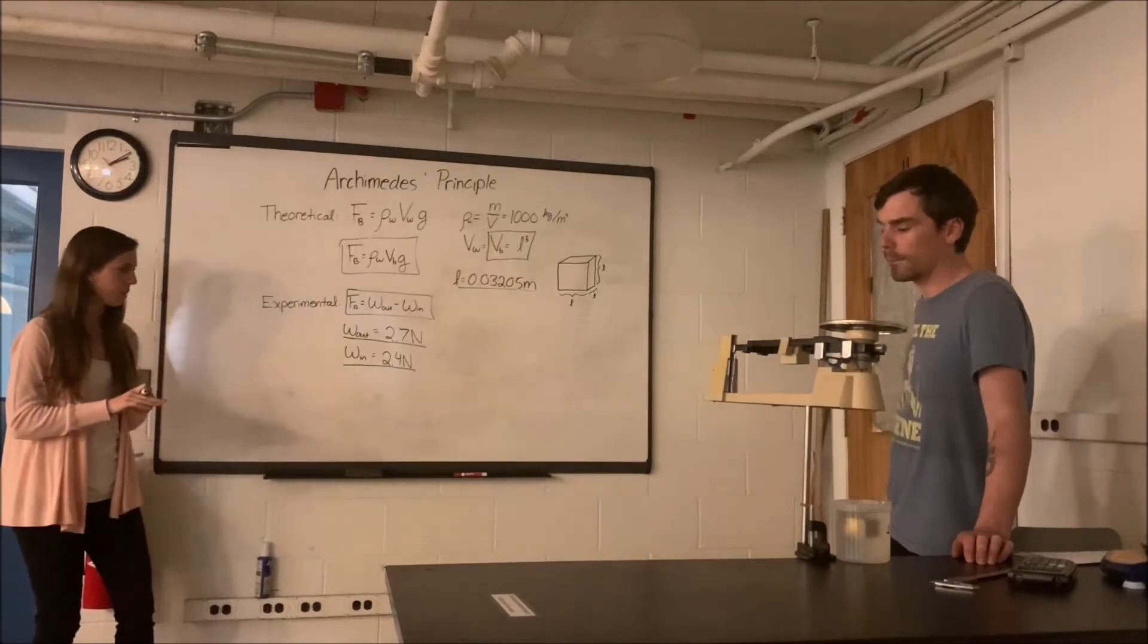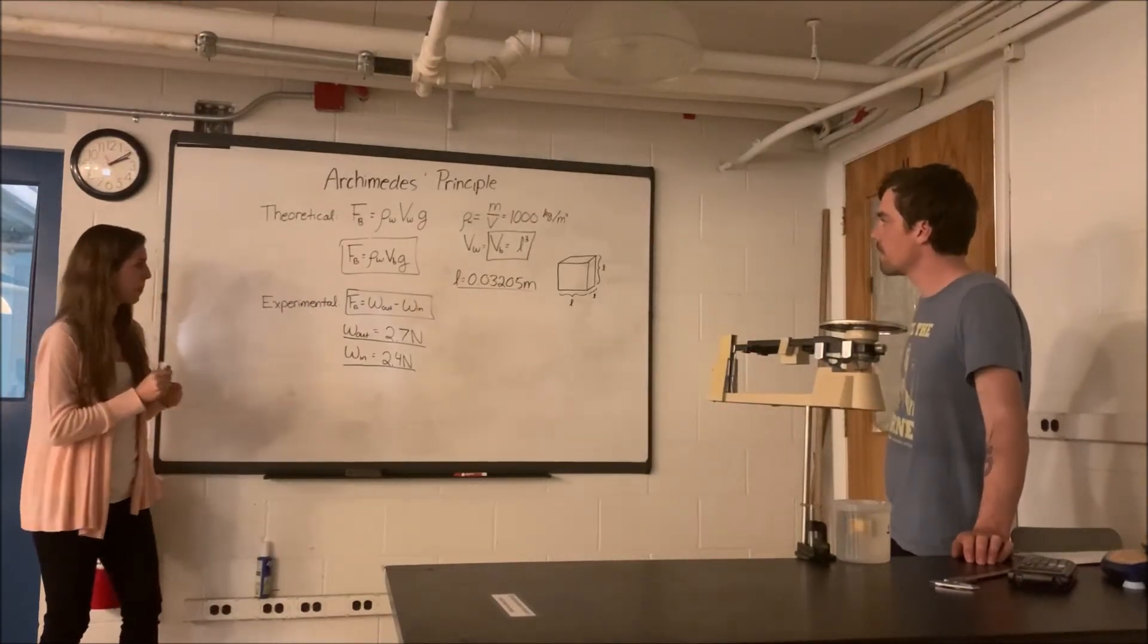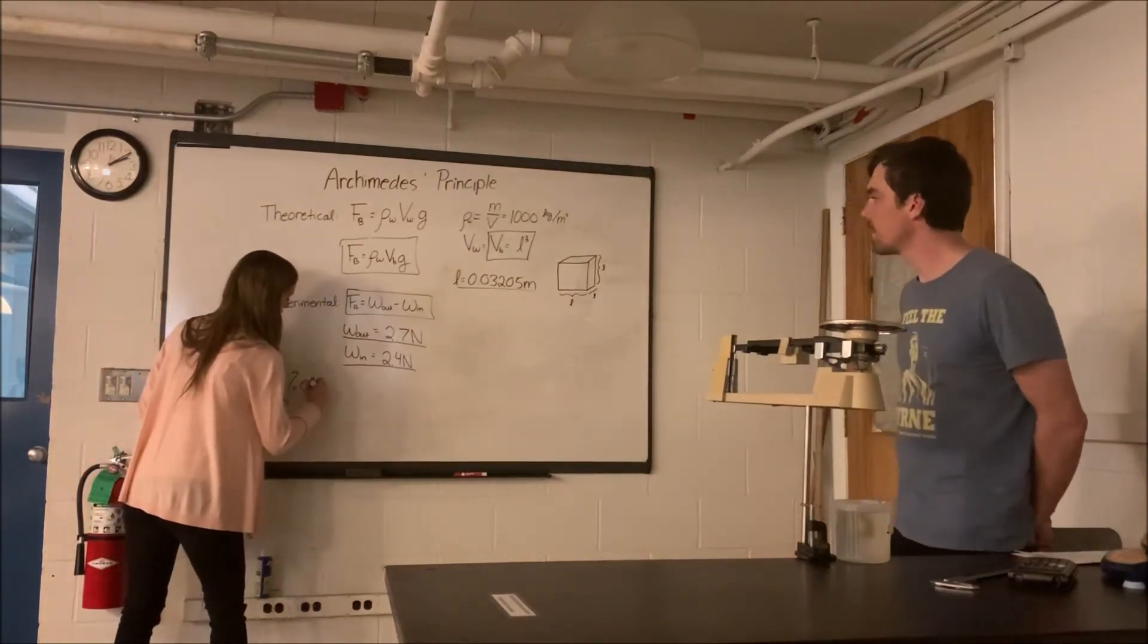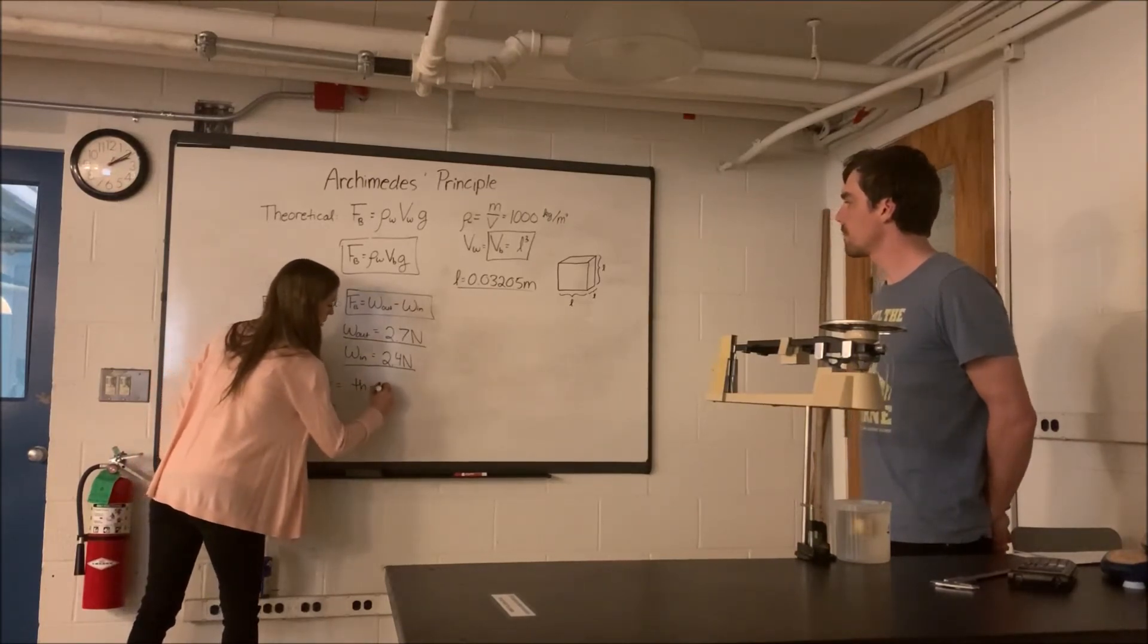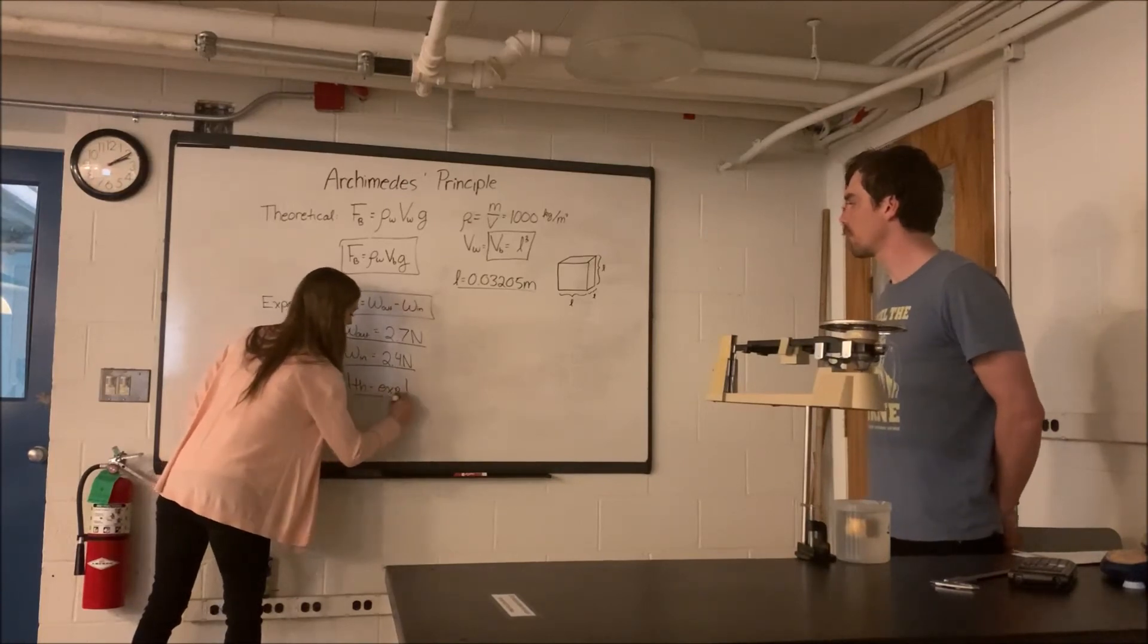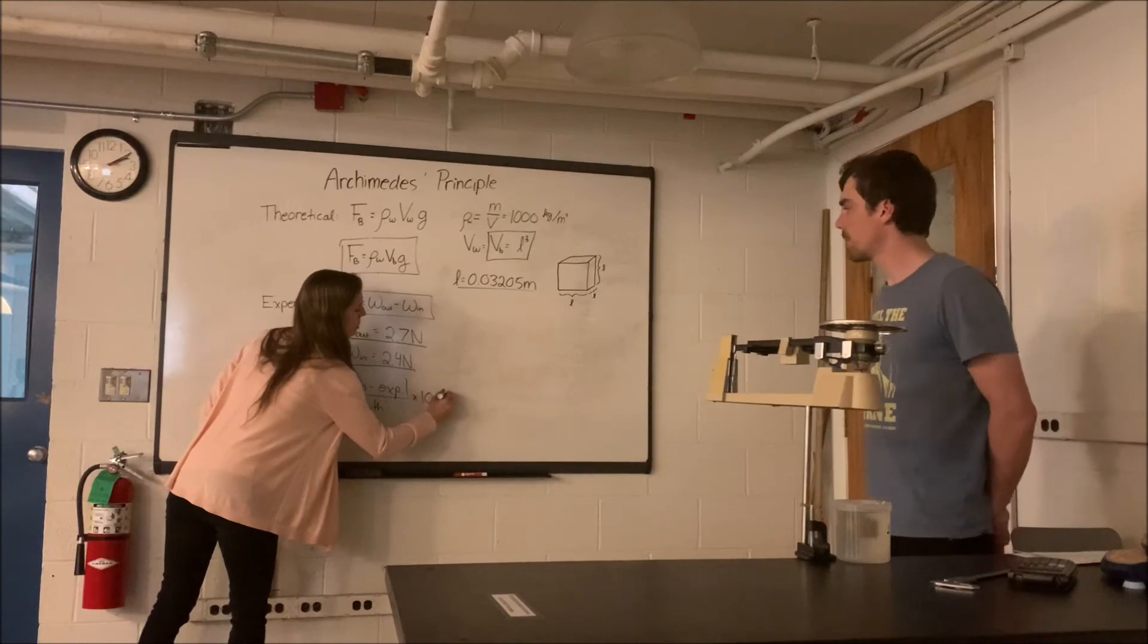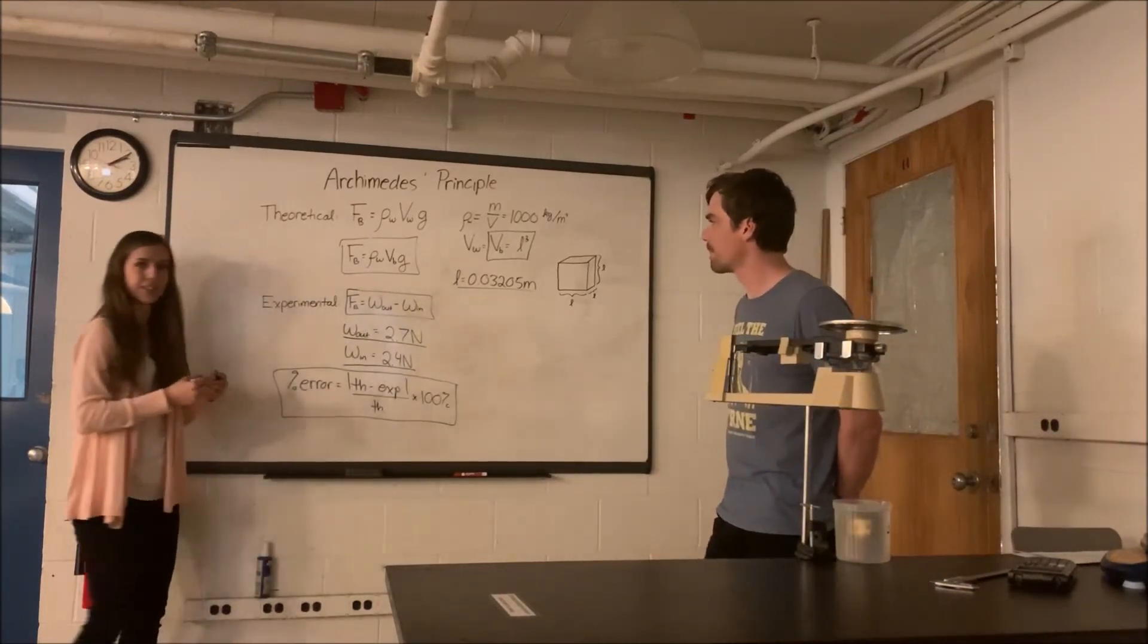Okay, so you have everything you need here. You'll subtract these and get your experimental. And then, of course, you'll do a percent error on this as well. In case you've forgotten, percent error is going to be equal to your theoretical minus your experimental, absolute value, divided by theoretical, times 100%. And that's it.